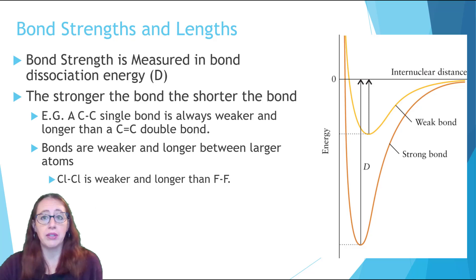The size of the atoms plays a role as well. For example, a Cl-Cl single bond is much longer and weaker than an F-F single bond, just due to the size of the Cl being larger than the size of the F.